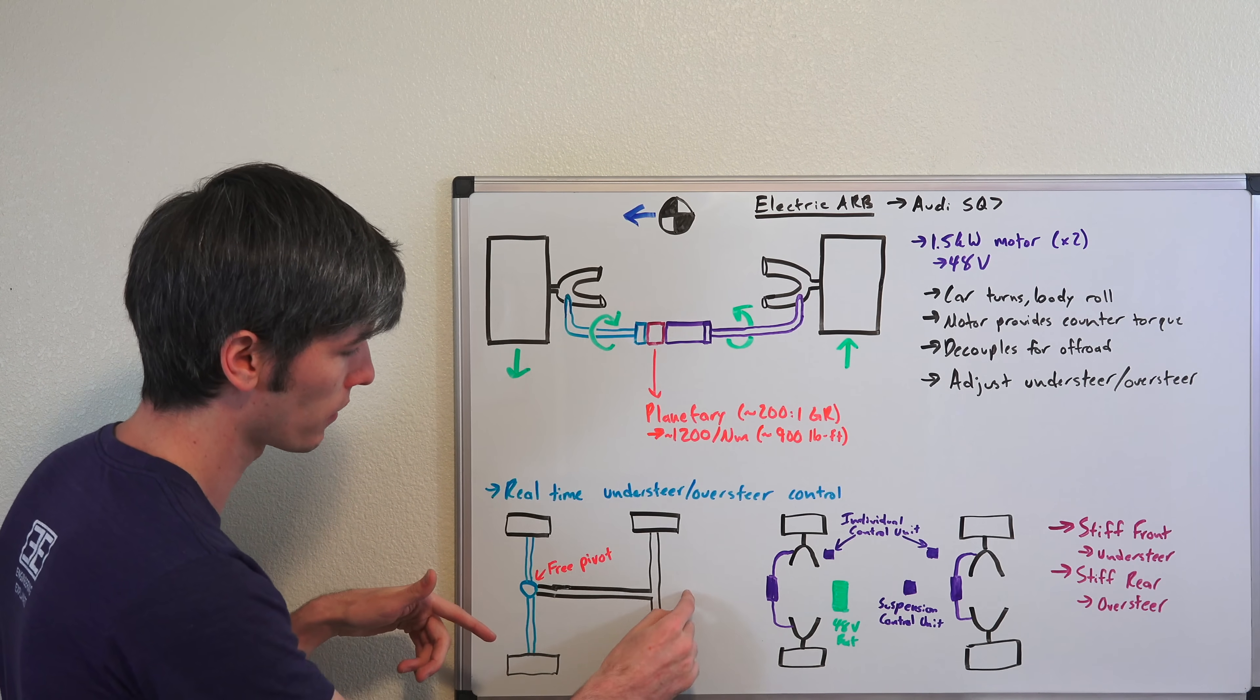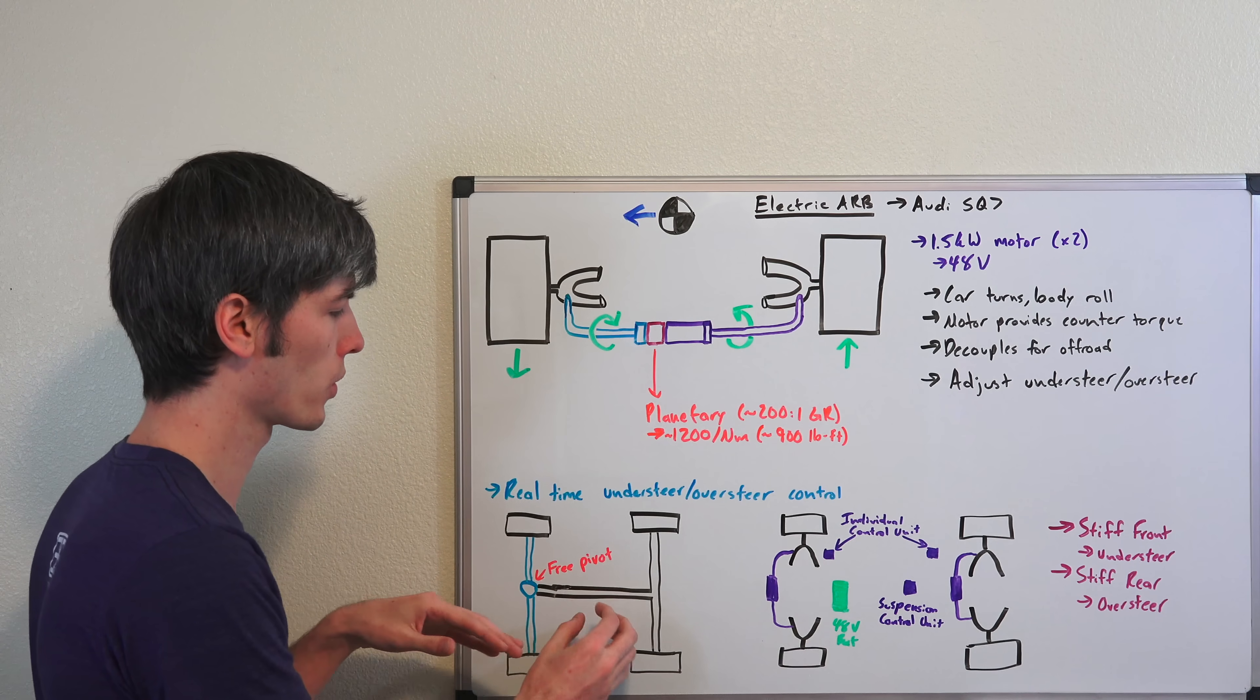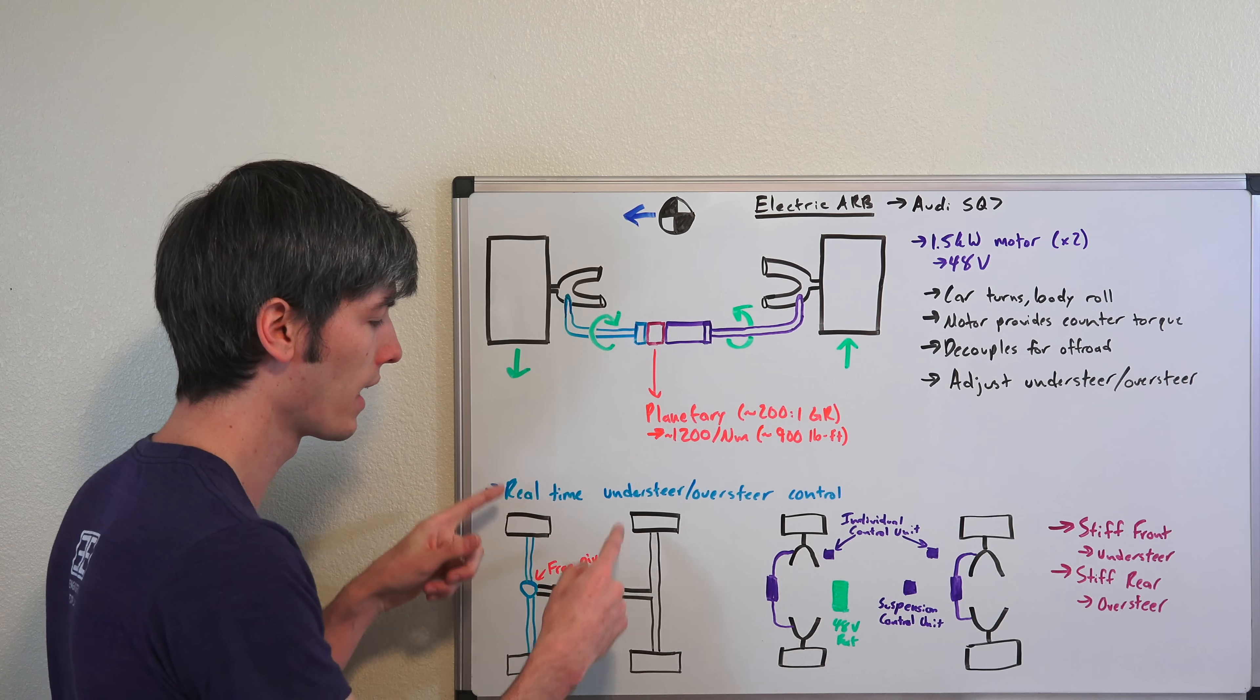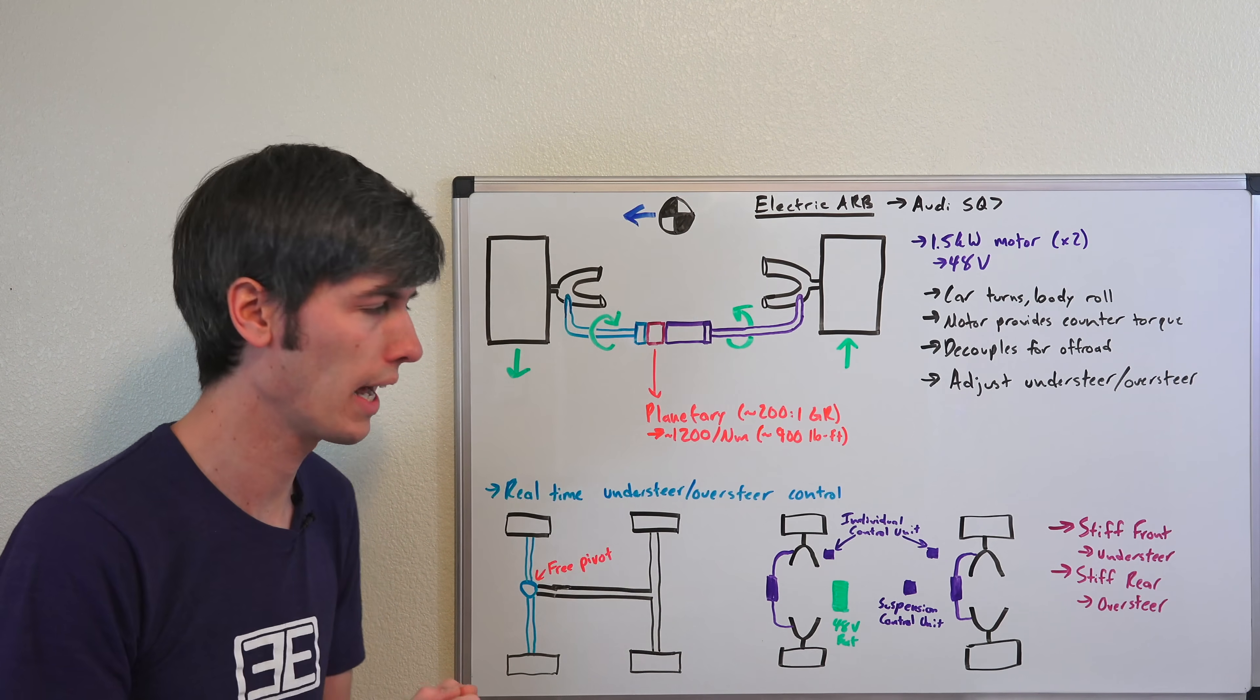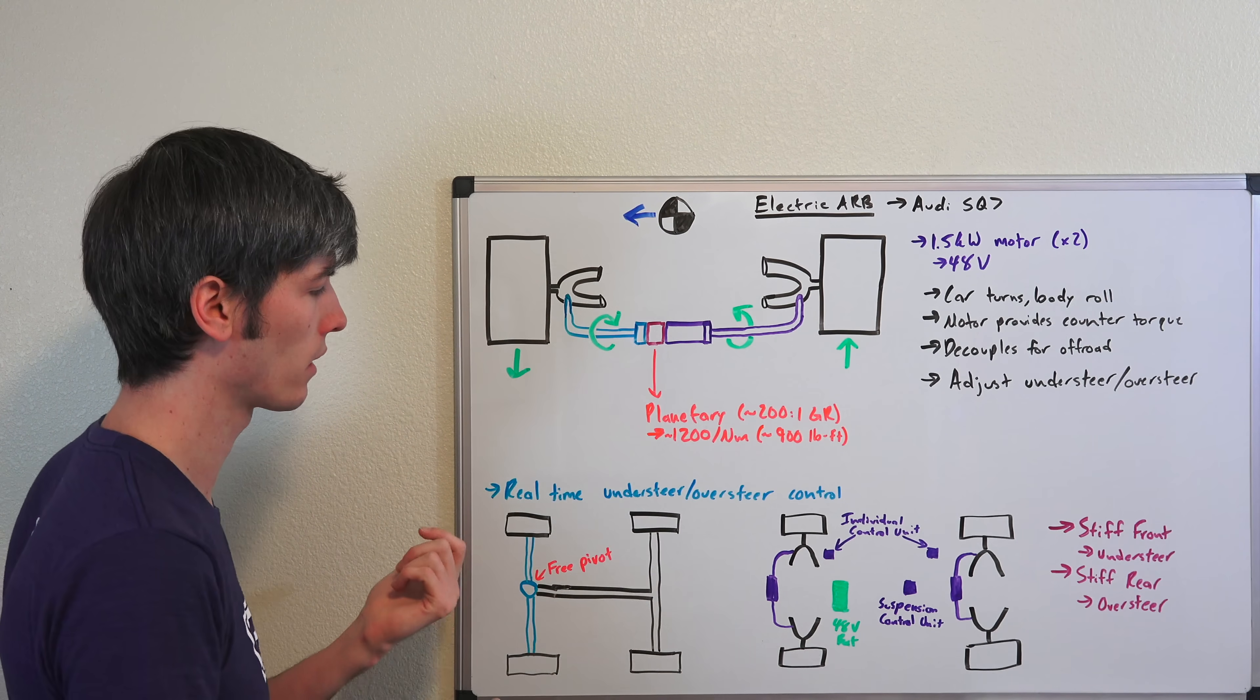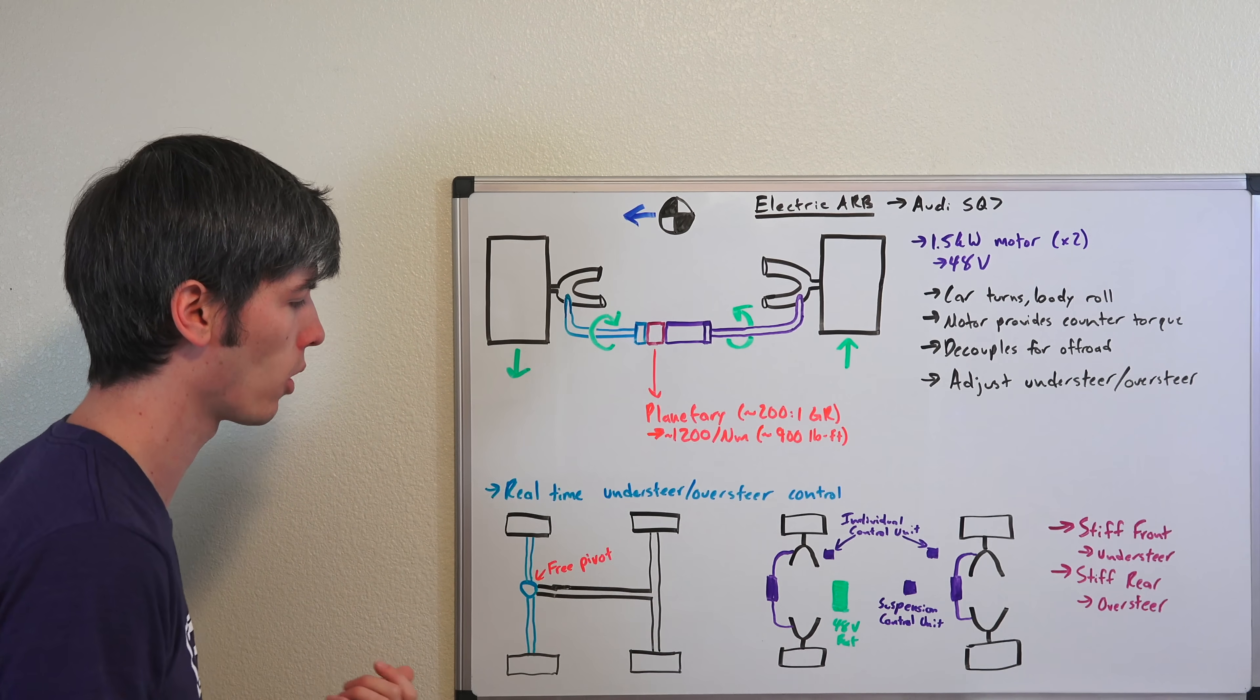If you think about a car—let's say this is the front—going around a corner, the amount of load transfer to these outside wheels is dependent on its center of gravity and track width. You can't really change how much load transfer you have, but you can change which tire, front to rear, gets the majority of that load transfer. That's partially based on how stiff your anti-roll bars are.